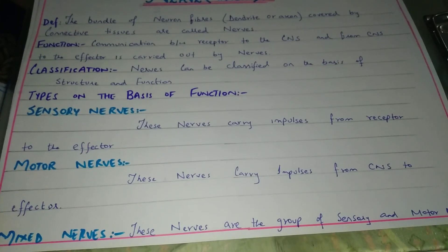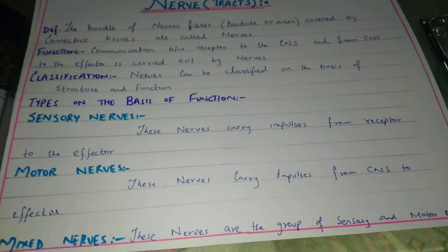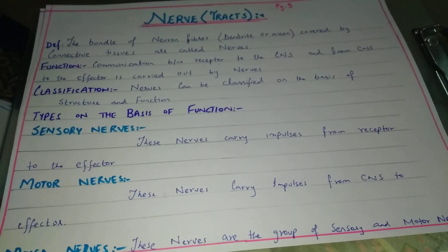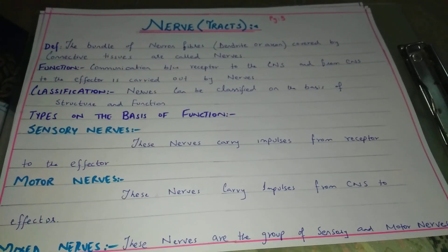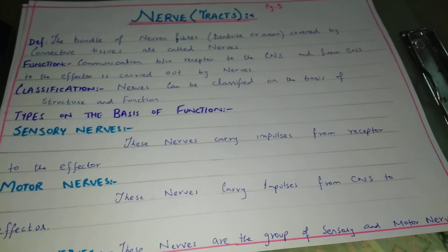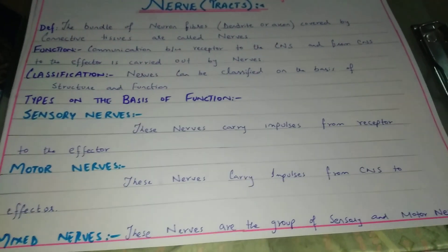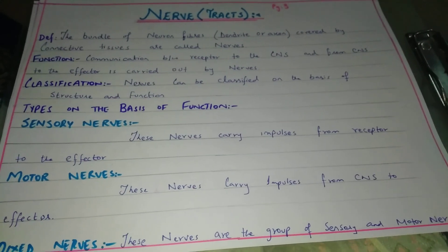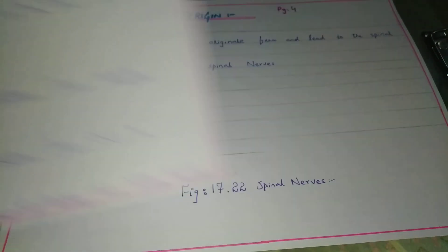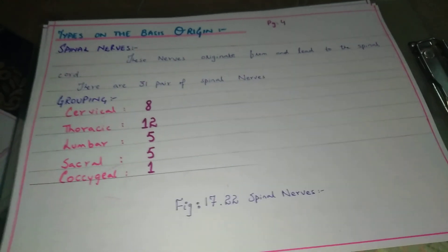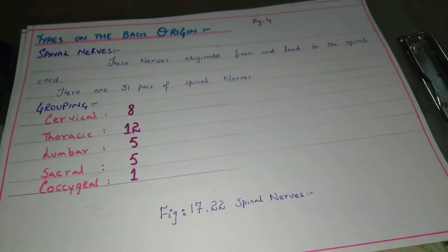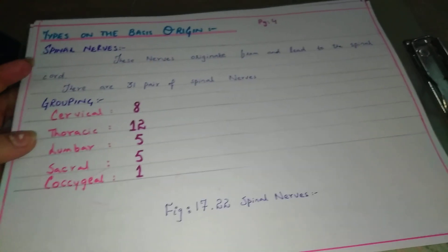On the basis of function, nerves are divided into three types: sensory nerves, motor nerves, and mixed nerves. Sensory nerves carry impulses from the receptors to the central nervous system. Motor nerves carry impulses from the central nervous system to the effector. Mixed nerves are a group of both sensory and motor nerves. Nerves are also classified on the basis of origin — if these nerves originate from the spinal cord, we call them spinal nerves.